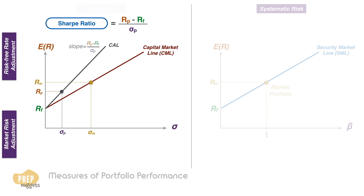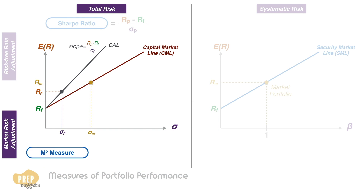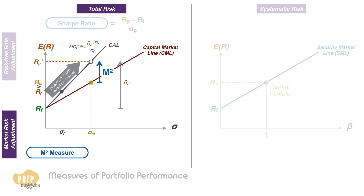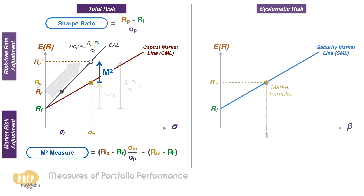The other measure based on total risk is the M-Squared measure, adjusted against the market portfolio. A portfolio may have a lower return than the market, but if we project the return based on its Sharpe Ratio, it may actually be outperforming. The M-Squared is the excess return over the market on a risk basis — calculated as the Sharpe Ratio times the market standard deviation, minus the return of the market portfolio above the risk-free rate.